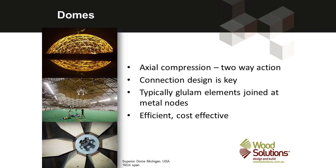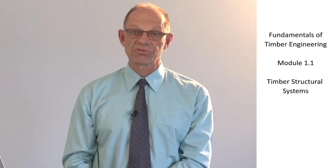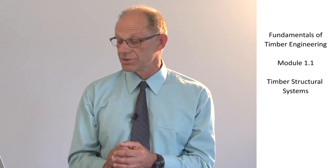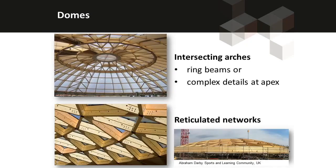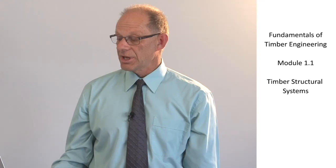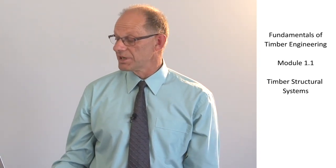If we think of three-dimensional structures where the arches all overlap each other, we have a dome structure. With a dome structure, it's essentially again making use of compression to transfer the axial loads down to the ground. Domes generally have two configurations: one is where the arches are completely continuous, as in the top photograph, and there the arches each function separately; or where the dome is constructed of a reticulated network of smaller members.